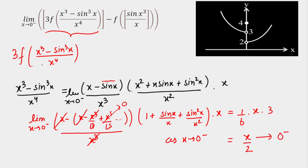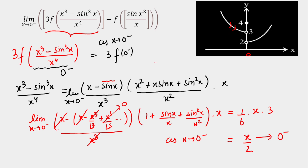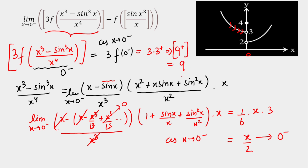Now let's analyze the function from the graph. As x approaches 0 negative, this input value is also tending towards 0 negative. So we get 3 times f(0 negative). From the graph, as x approaches 0 from the left (0 negative), f(x) approaches a value slightly greater than 3 but essentially equal to 3 — that is, 3 positive. So this part gives 3 × 3⁺ = 9⁺, and GIF(9⁺) = 9. The first part is 9.